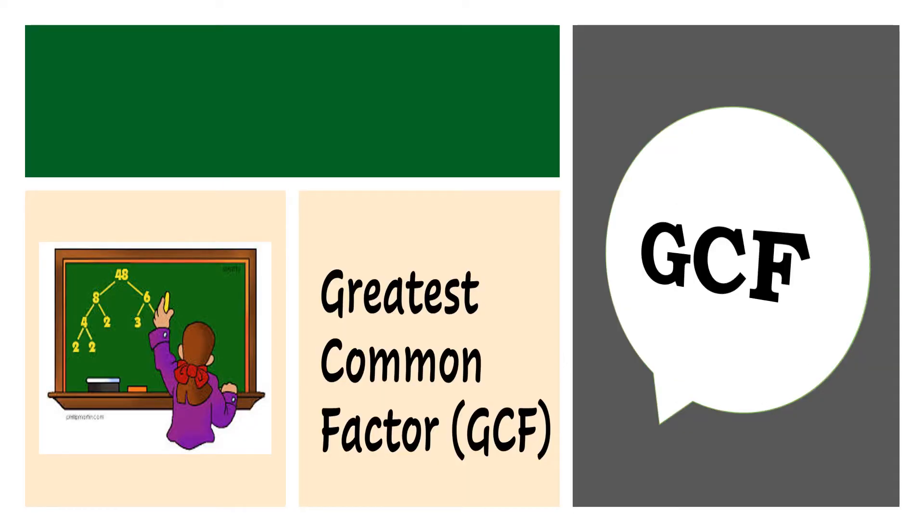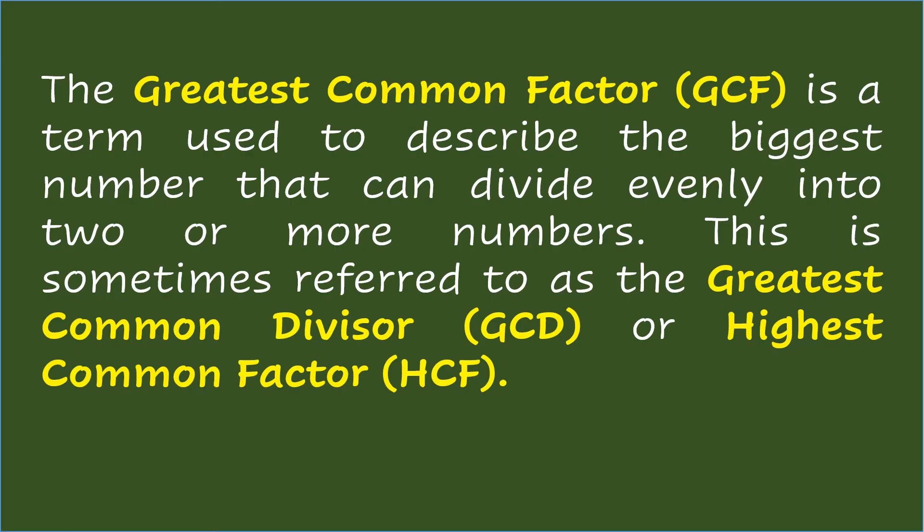The Greatest Common Factor, or GCF, is a term used to describe the biggest number that can divide evenly into two or more numbers. This is sometimes referred to as the Greatest Common Divisor, GCD, or Highest Common Factor, HCF.